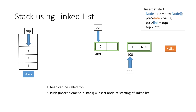We make the link part of the node equal to top, that is it has the value 100, which means it is pointing to the previous node. And finally we move our top pointer to the newly created node by equating it to ptr.